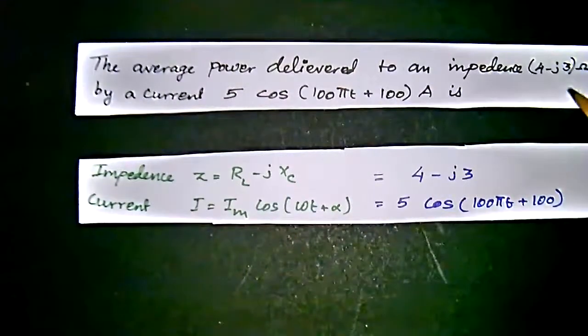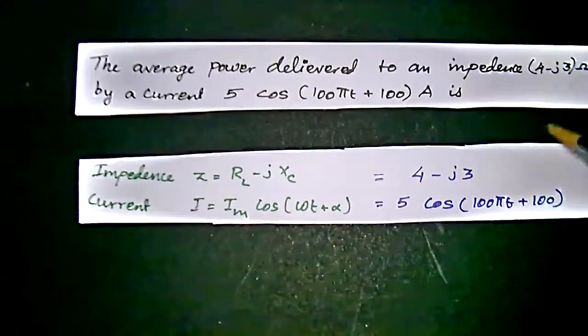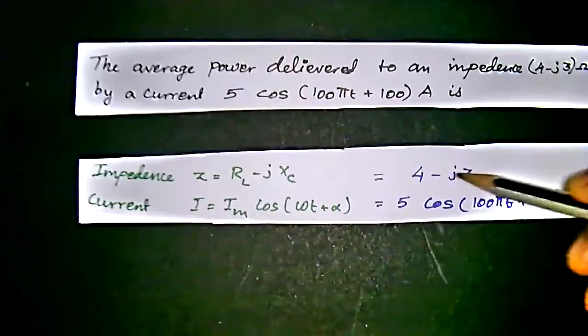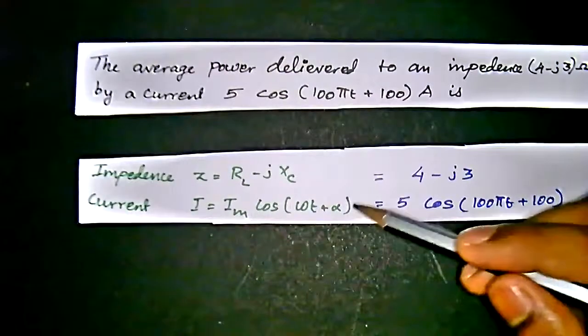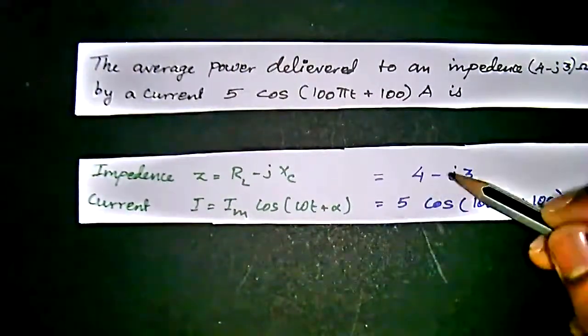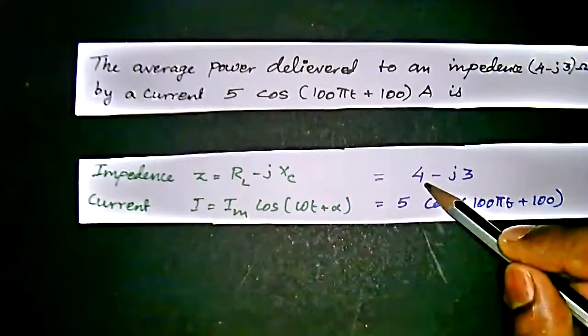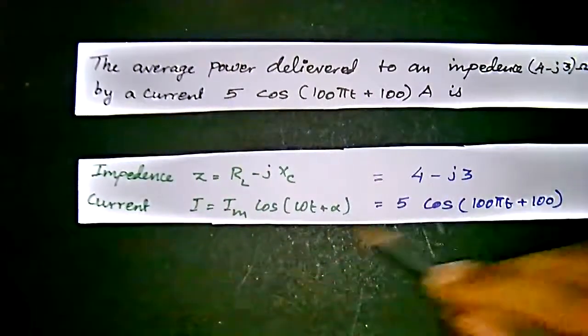Here, we are directly equating this equation 4 minus j3 and 5 cos 100πt plus 100 to these two equations. So we will get RL equal to 4 and IM equal to 5.